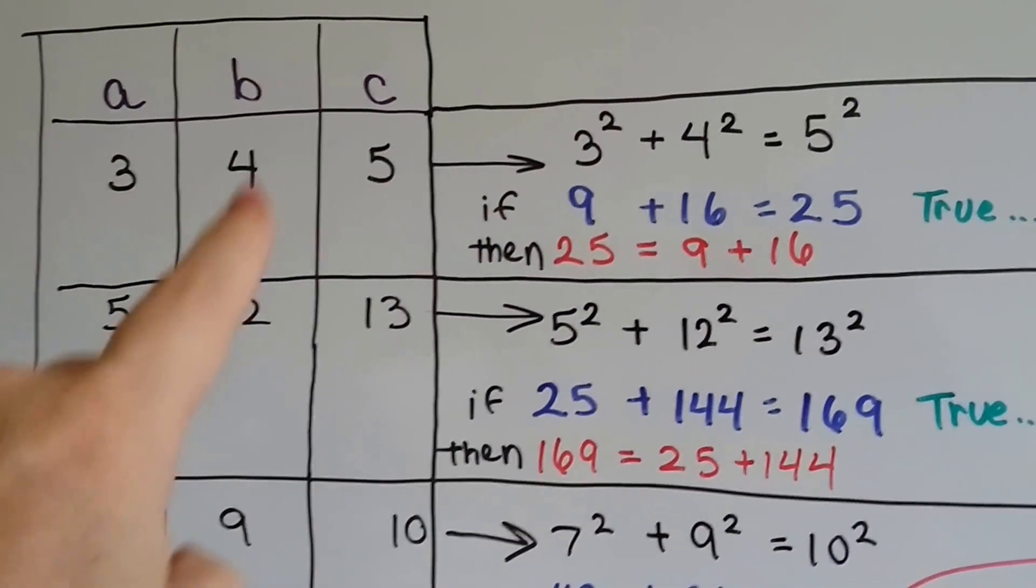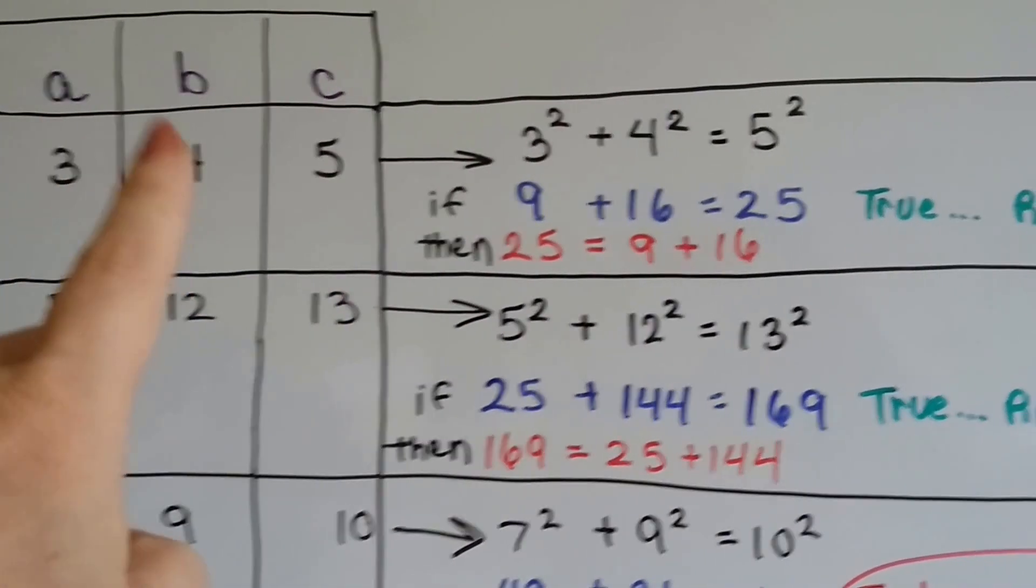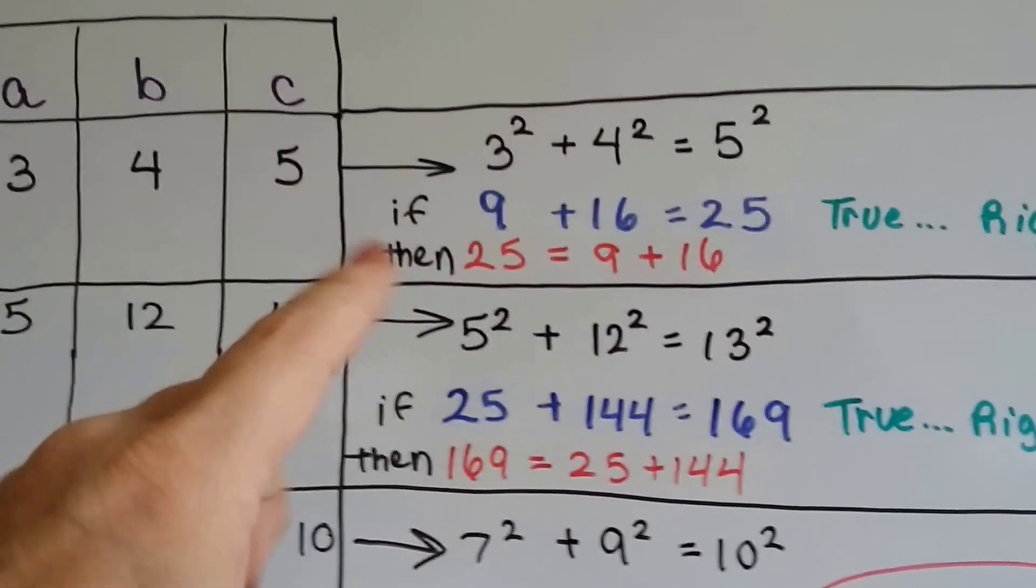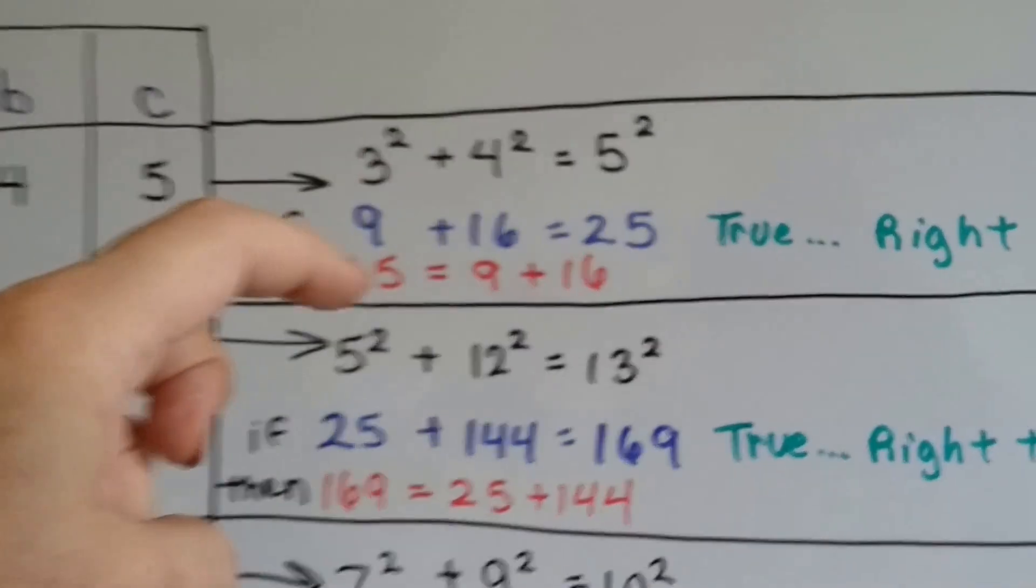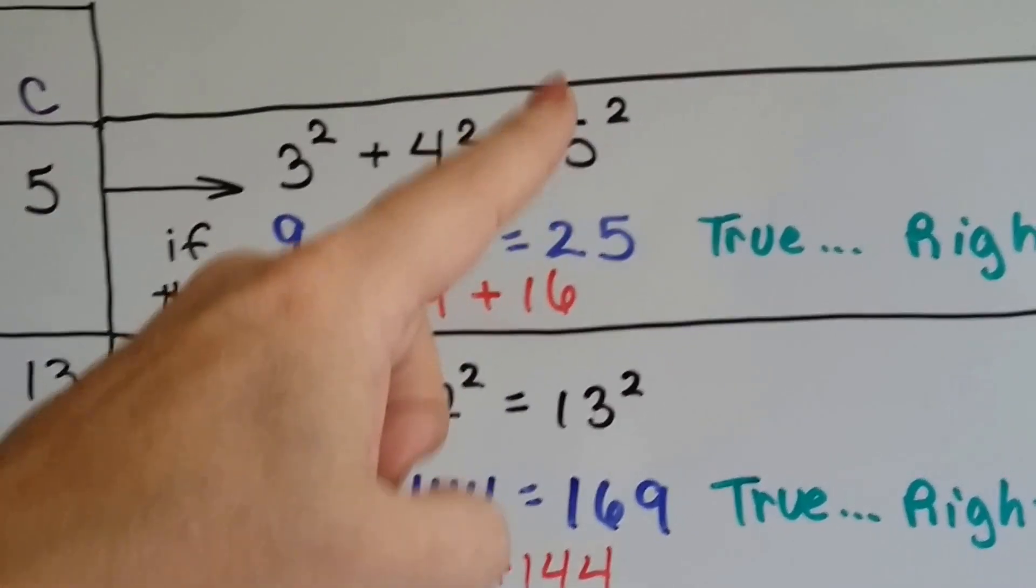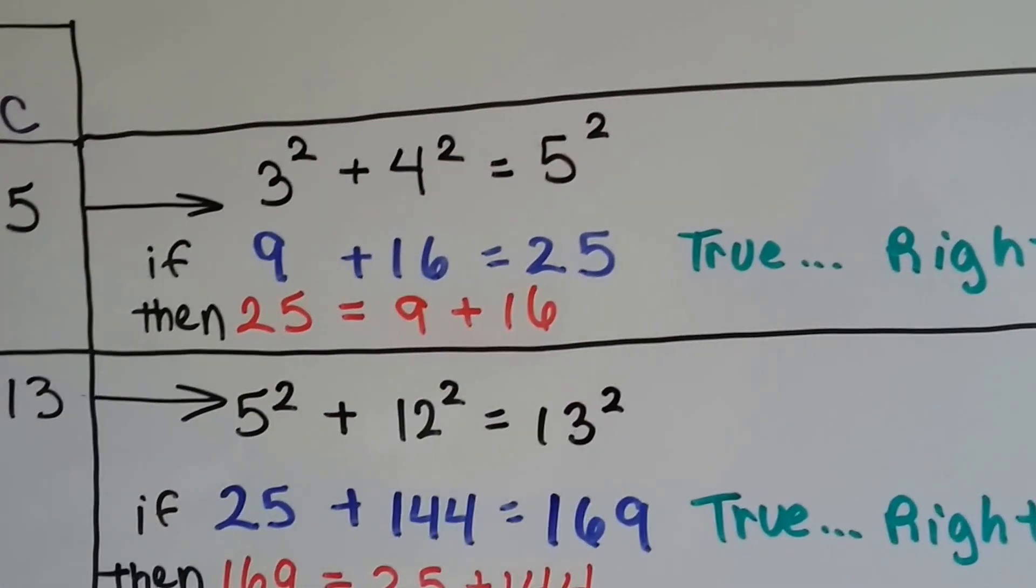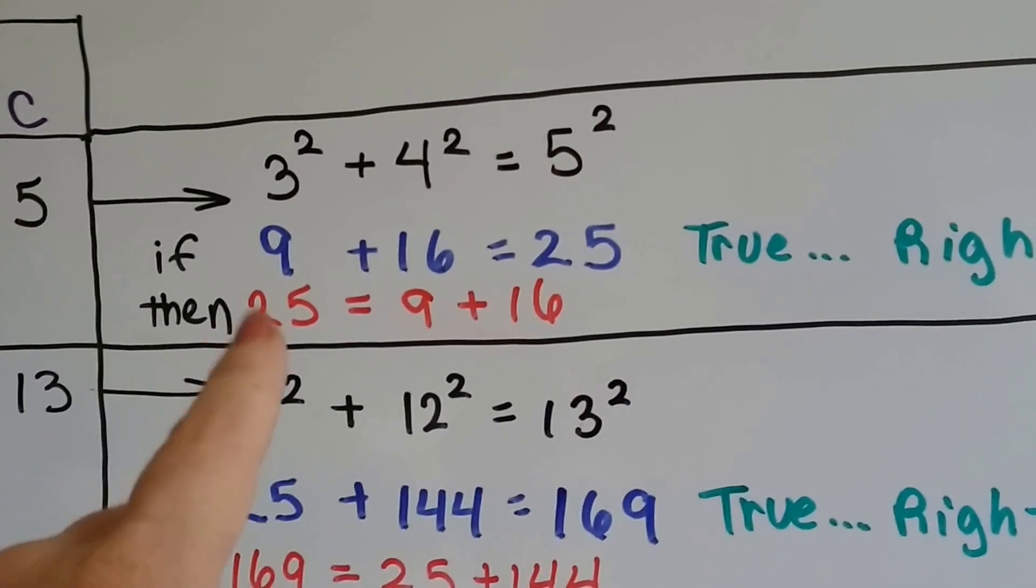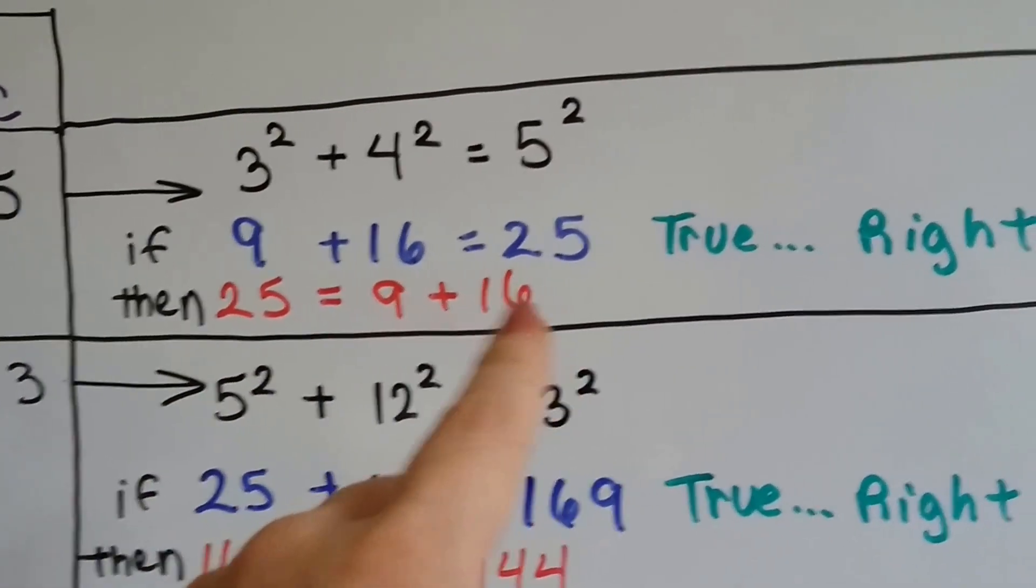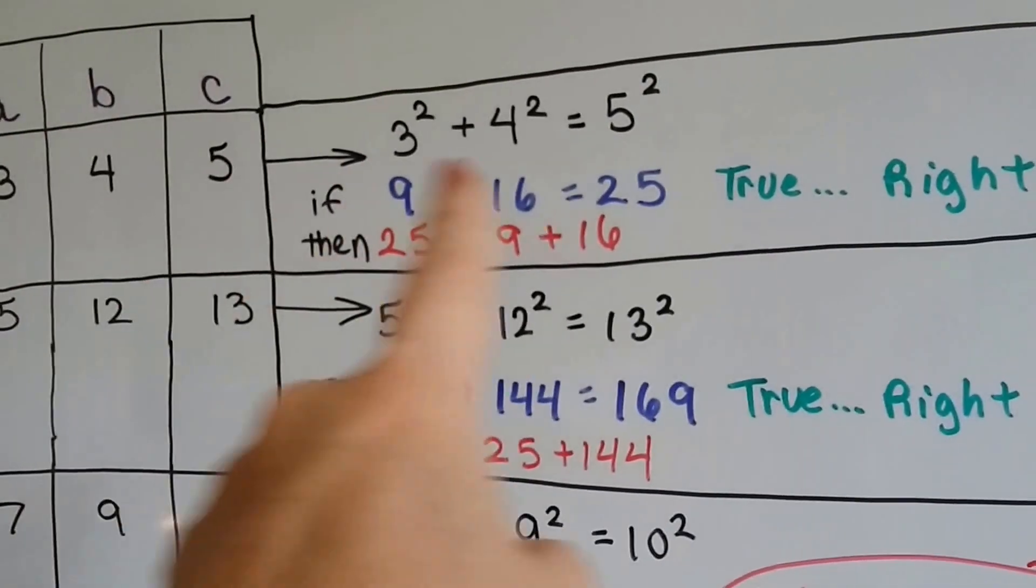And if a is 3, b is 4, and c is 5, then that means 3 squared plus 4 squared equals 5 squared. Well, 3 squared is 9, and 4 squared is 16, and 5 squared is 25. Well, it's also 25 is equal to 9 plus 16.